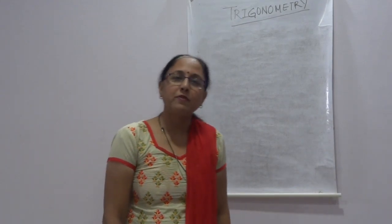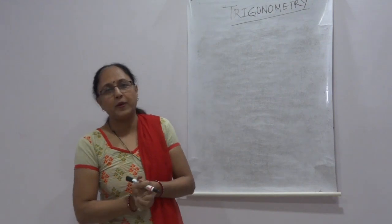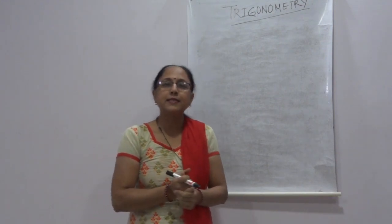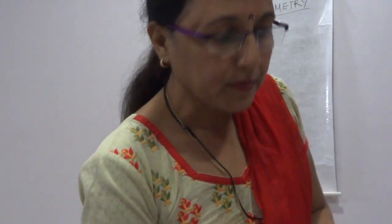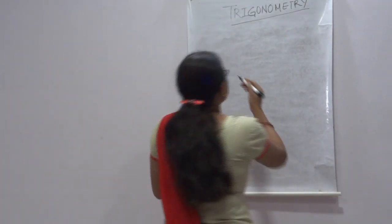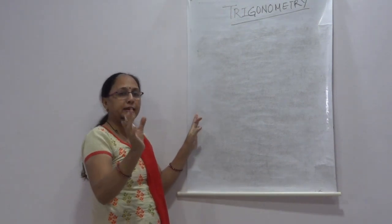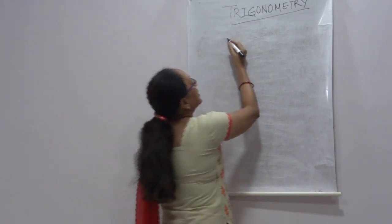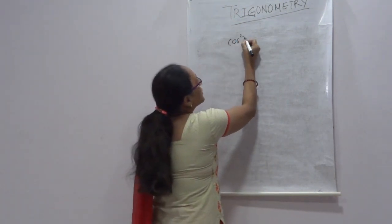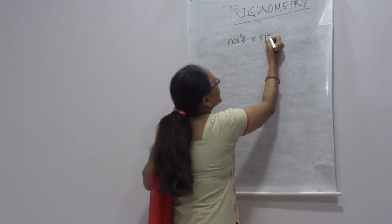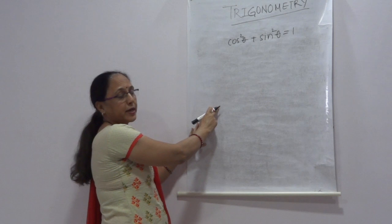Good morning to all of you. Today we will start the next exercise of trigonometry, that is Exercise 8.4. Before going to this exercise, I want to tell you about identity-based concepts. Like cos²θ + sin²θ = 1 — these identities are very important.